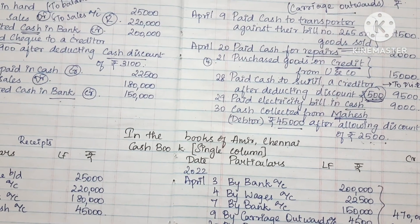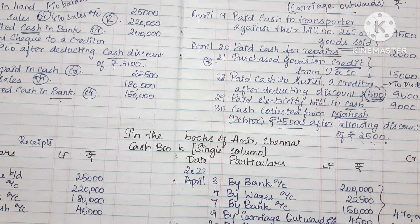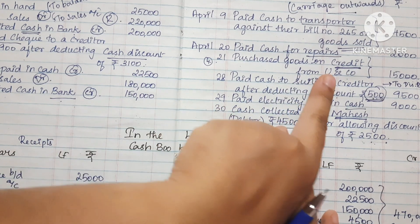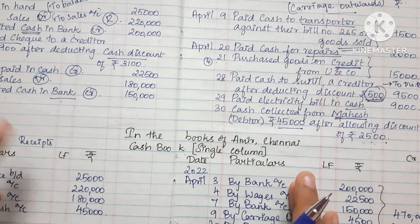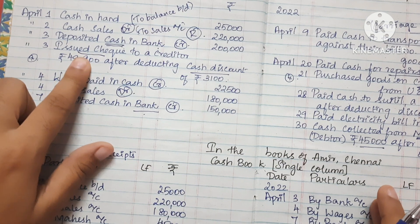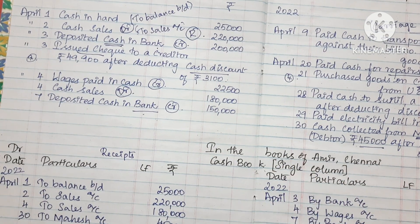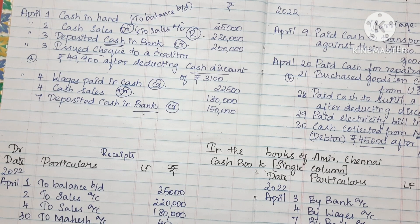This is how a single column cash book is prepared. Discounts are not recorded directly here — discount received from credit transactions and bank-related entries are handled separately. If you have any doubts, please ask in the comment box. Stay tuned for more videos. Keep watching, keep learning. Thank you.